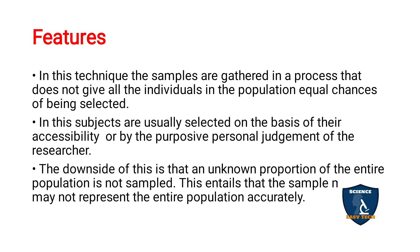The researcher decides based on personal judgment that a particular candidate will be helpful for the research study. The downside is that an unknown proportion of the entire population is not sampled, meaning the sample may not represent the entire population. In probability sampling, everyone has an equal chance and the sample better represents the population. In non-probability sampling, you are taking according to your own wishes, so it may or may not represent the general population.